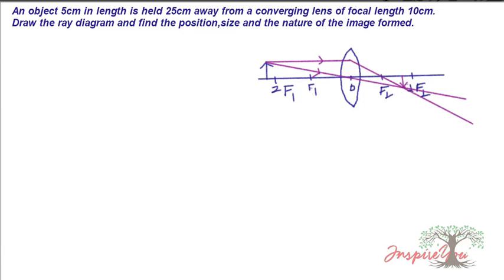Hello students, here's a question to solve. An object 5 centimeters in length is held 25 centimeters away from a converging lens of focal length 10 centimeters. Draw the ray diagram and find the position, size, and nature of the image formed. This is a converging lens, also called a convex lens, with focal length 10 centimeters. The object is placed 25 centimeters away.